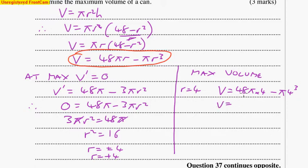48 times 4 is 192π minus 64π. And that volume, 192 minus 64 is 128π.